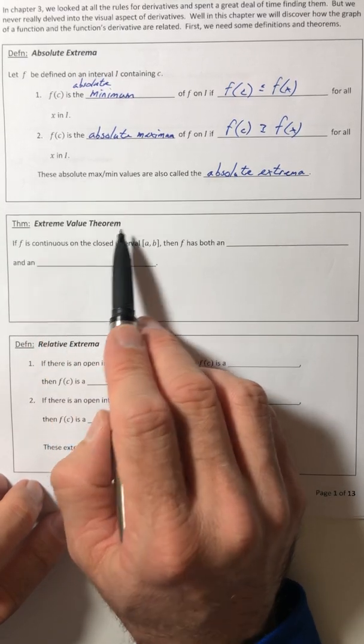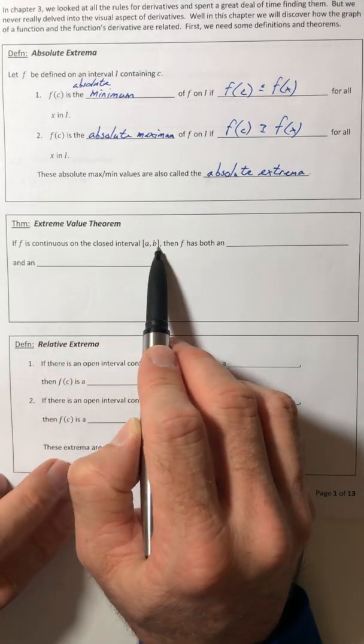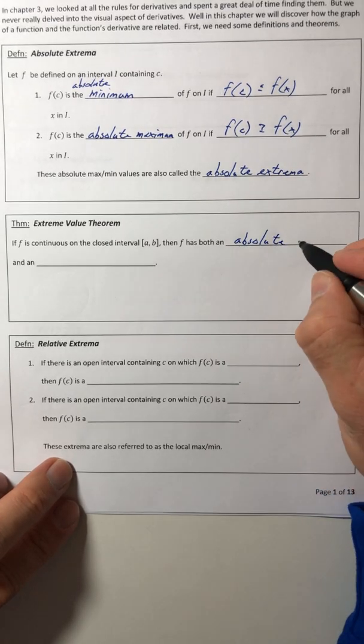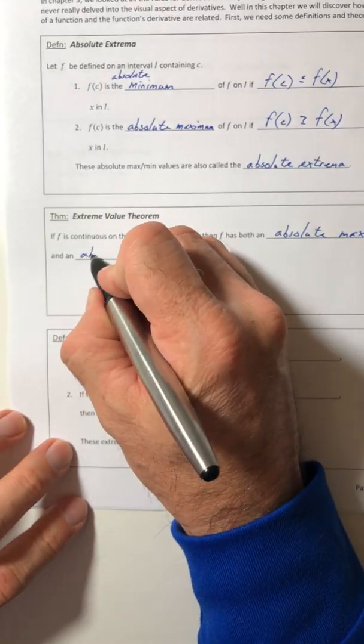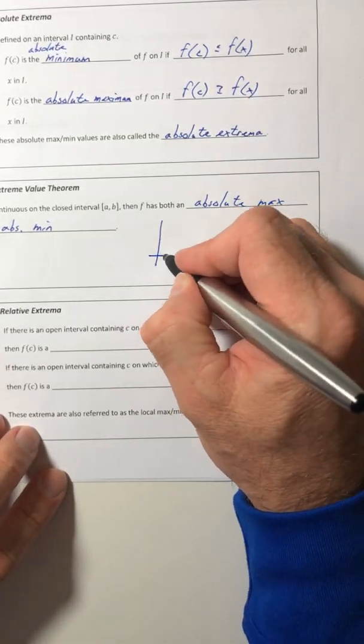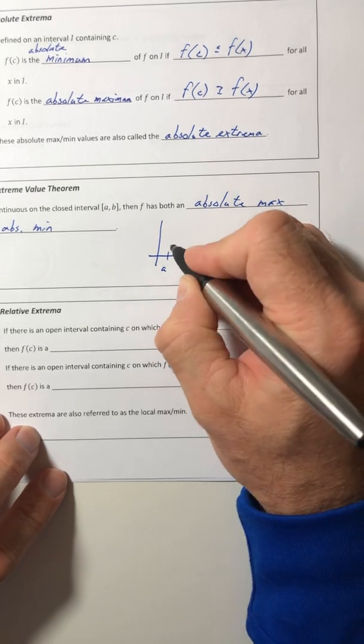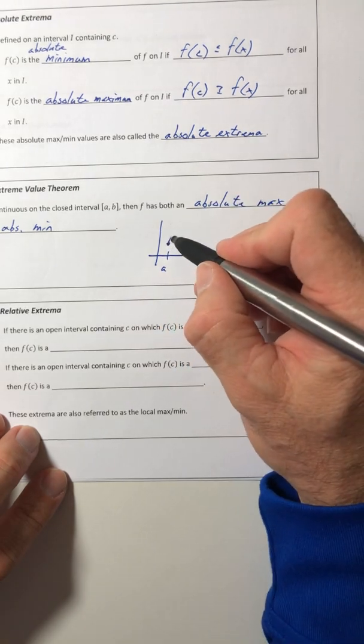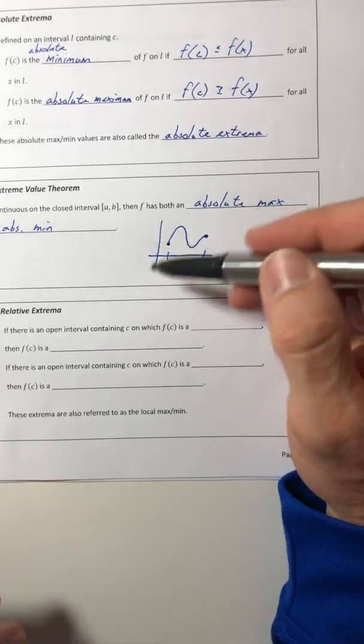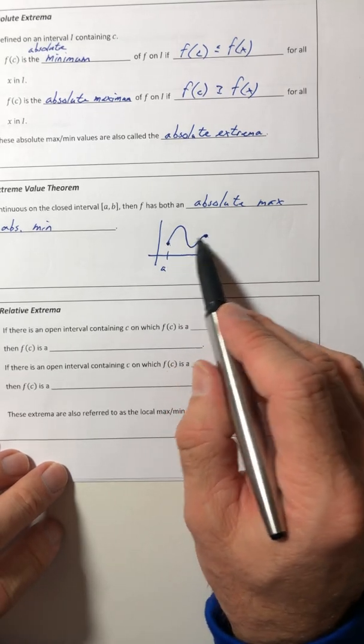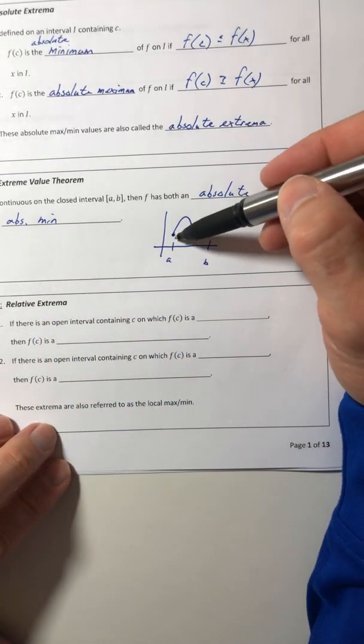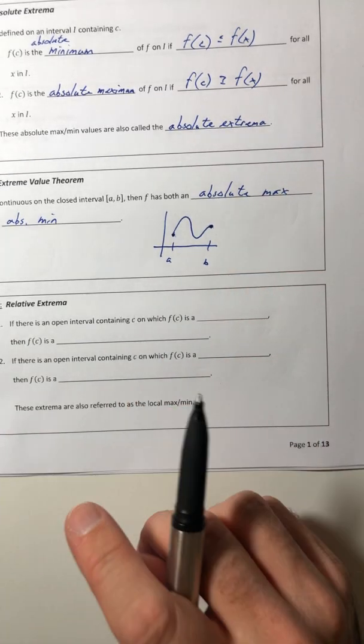First theorem of the chapter, extreme value theorem. If F is continuous on the closed interval A to B, then F has both an absolute max and an absolute min. It would have to because it's saying, okay, if you go from A to B and it's continuous, your function is going to have to curve around from A to B and it's going to curve around however it wants to. It could even just be a line that connects the two, it could be a horizontal line going all the way across, but it's got to be continuous.